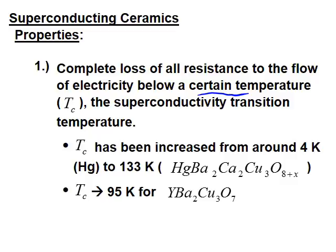These transition temperatures are different depending upon the composition of superconducting materials. For example, for one complex composition the transition temperature is about 133 K, and for a composition with yttrium it is 95 K. At those temperatures or below, there will be no resistance to the flow of electrons or electricity through superconducting materials.